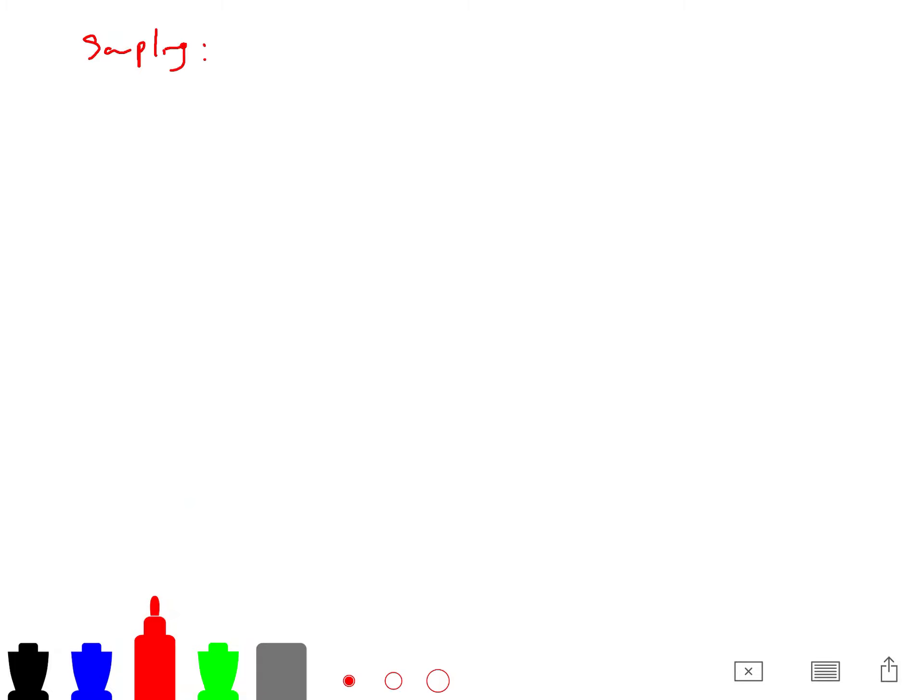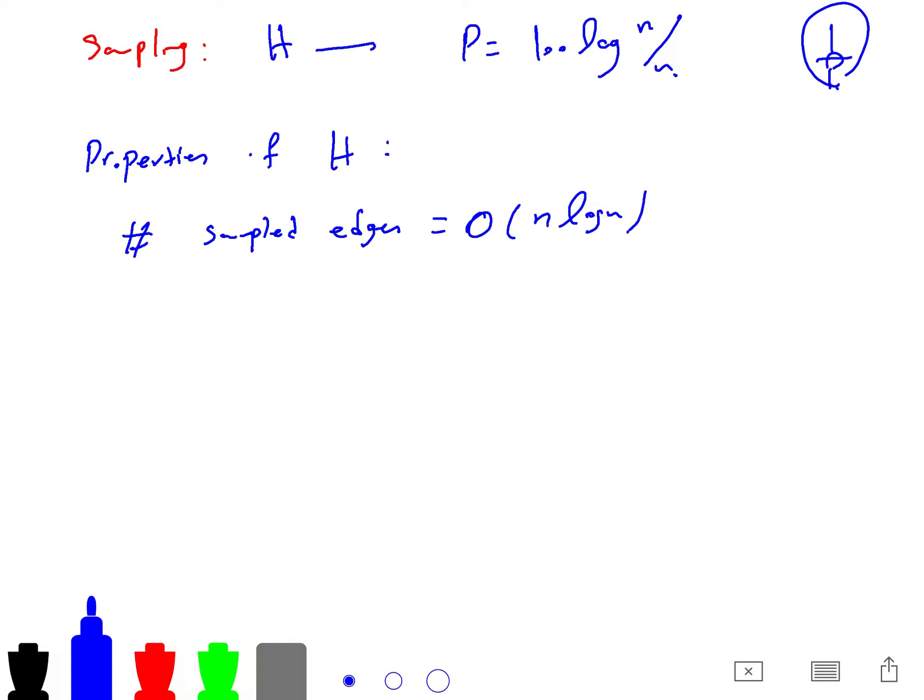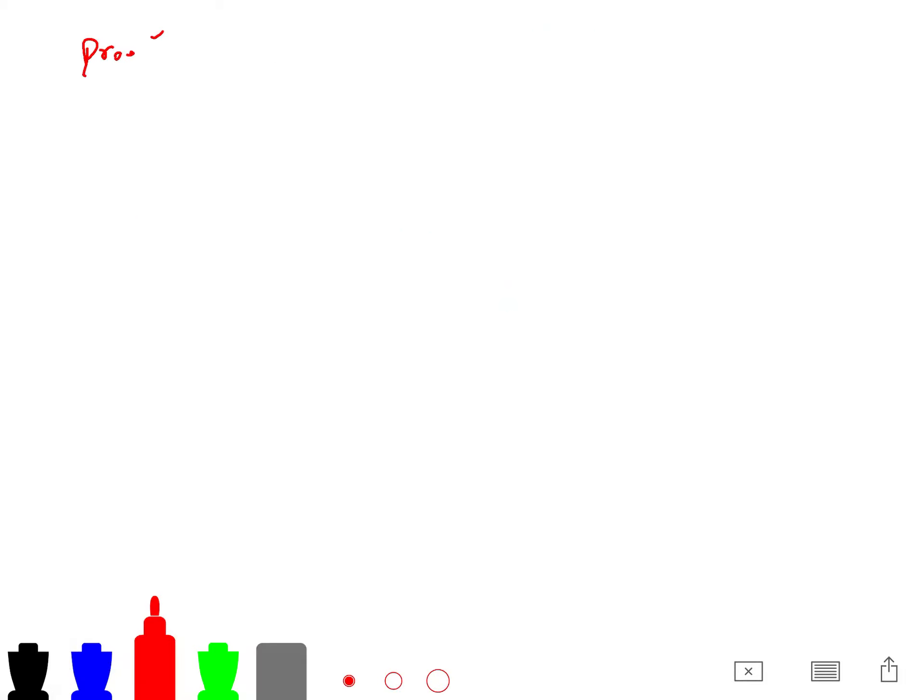And when they say sampling in their articles, it means that we construct edge by sampling every edge with probability 100 log of n. And so we give each edge the weight 1 over p. So what are the properties of this edge? First of all, the number of sampled edges are order of n log n. And the cuts are preserved. Delta G of U, Delta H of U, and for any U. So cuts are preserved. And so let me give you just a proof sketch.